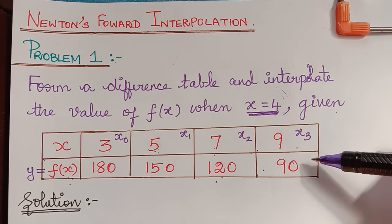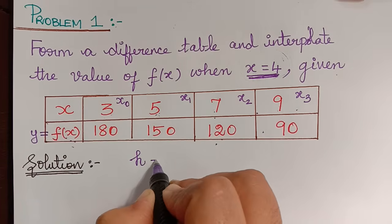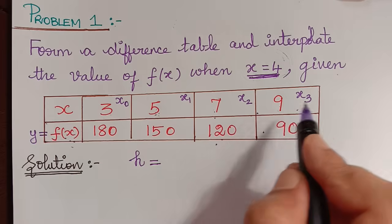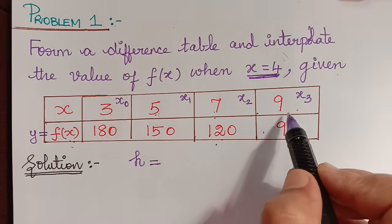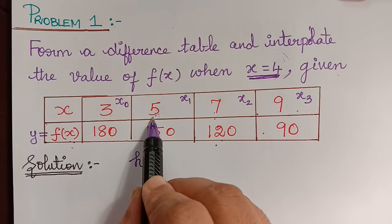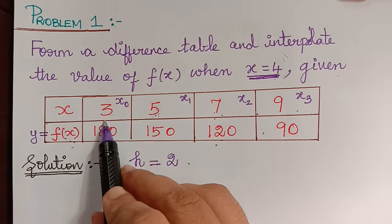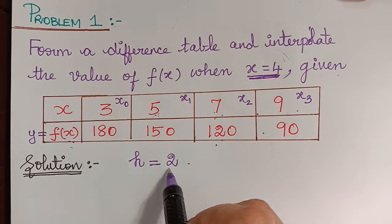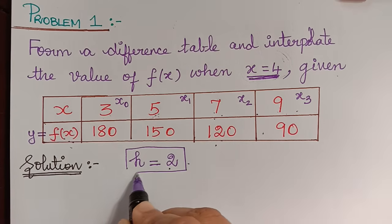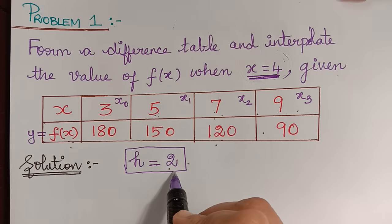The first step is to write the value of h, which is the constant equal interval difference. Since 5 minus 3, 7 minus 5, and 9 minus 7 are all 2, the value of h is equal to 2.